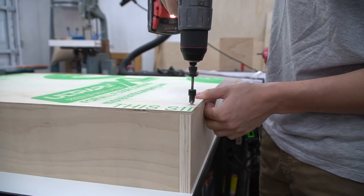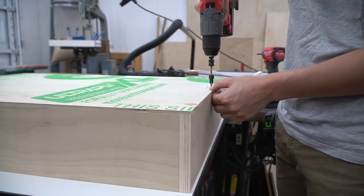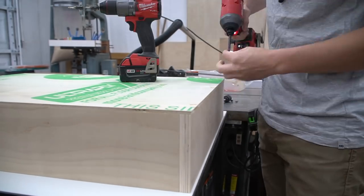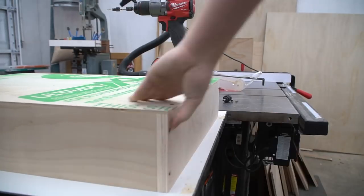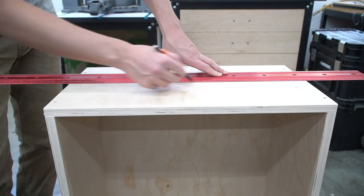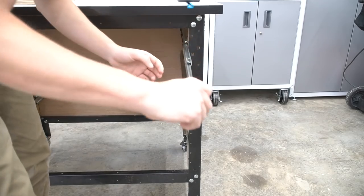To ensure the drawers are super strong, we came back and added screws to the sides and bottom of each drawer. Now it's time to install the drawers. First mark a line down the center of the drawer.